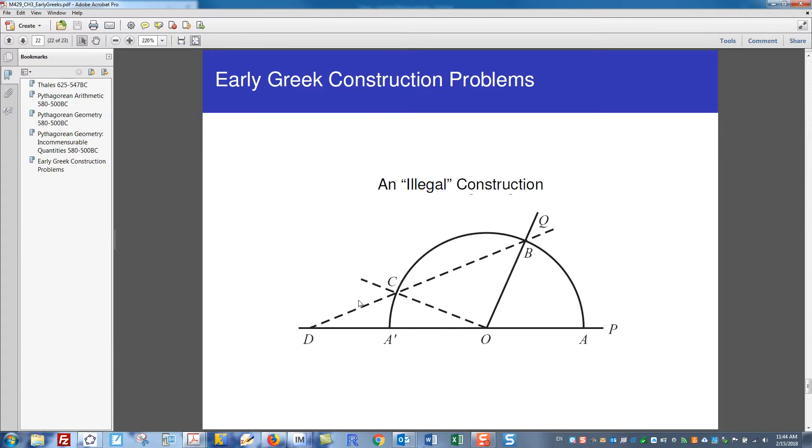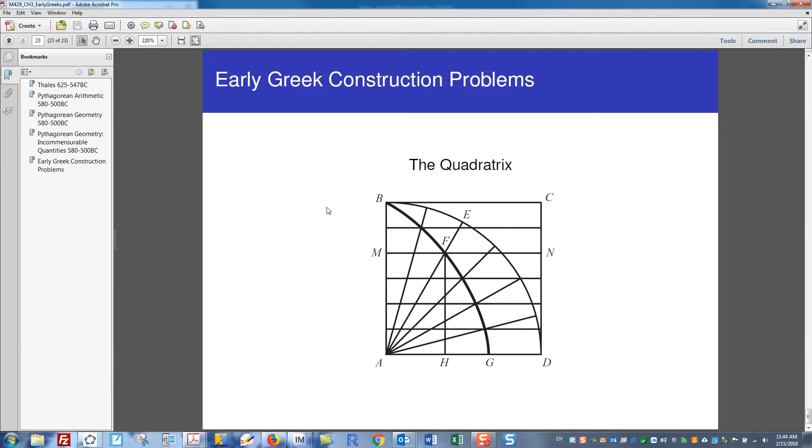There was, for example, many constructions presented, such as this one, which are considered to be illegal constructions because a marked straight edge is used in the construction. But one interesting object that emerged from the effort to solve the trisection question is this idea of this special curve called the quadratrix.